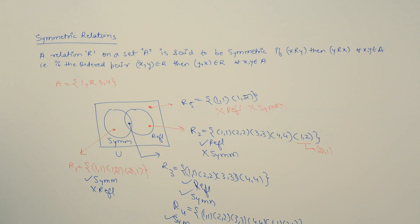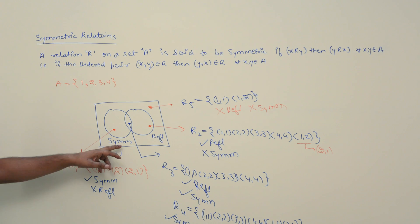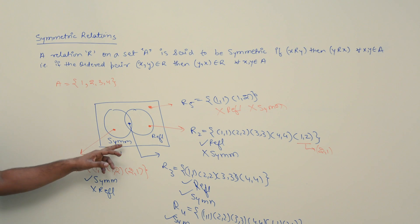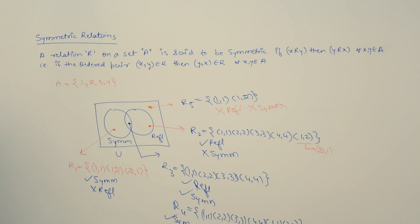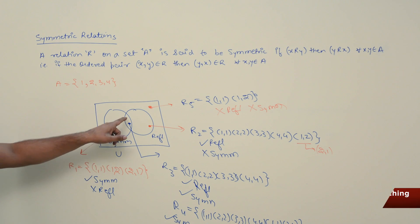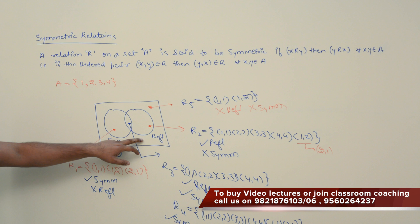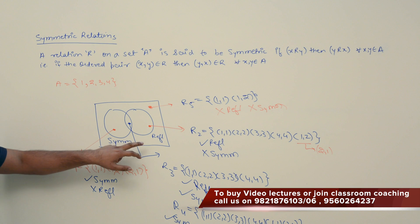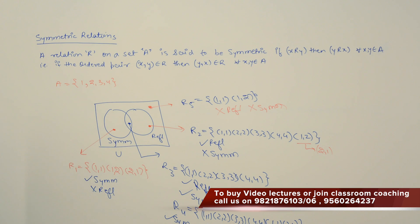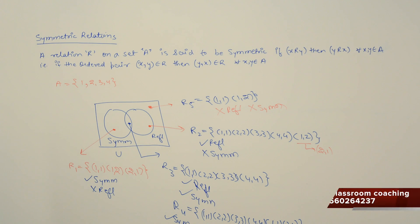Now, can you tell me: what are the number of relations which are symmetric, and what are the number of relations which are reflexive? What are the number of relations which are both symmetric and reflexive? And what are the number of relations which are neither symmetric nor reflexive? Try to think about it.